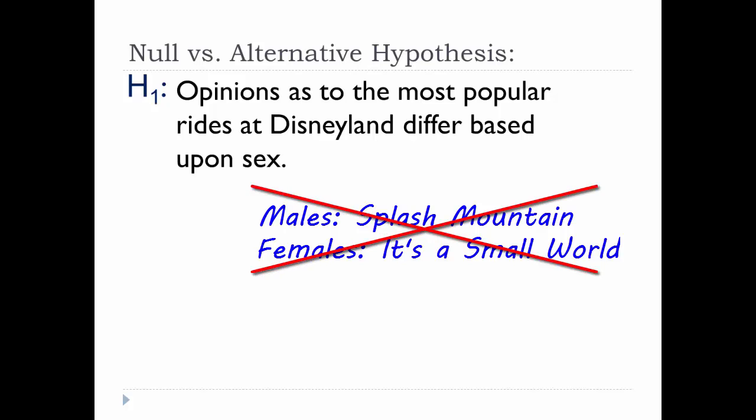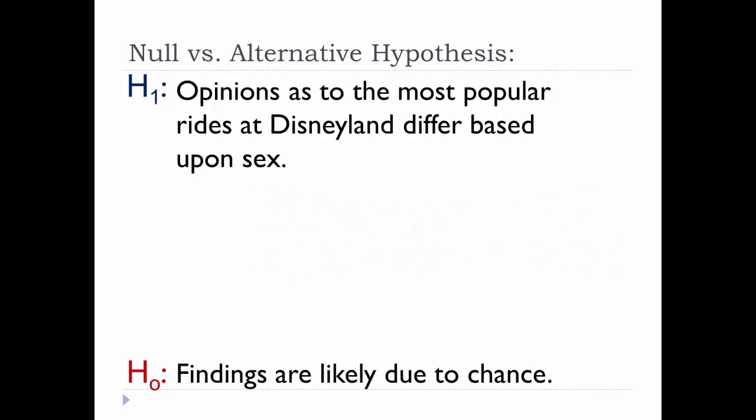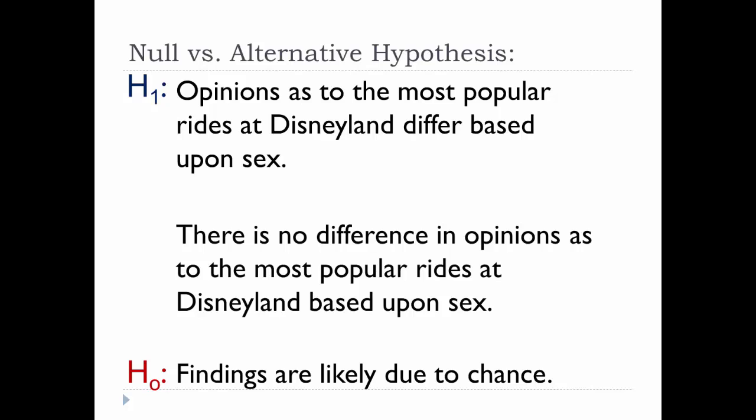One view is that you can't trust your findings, that the answers that you got occurred by chance. Note that in this view, the null hypothesis isn't saying that males and females don't have different opinions as to the most popular Disneyland attractions, just that your findings aren't outside the realm of chance or circumstance. We can't use your data to support your hypothesis. Your findings could just as easily come back that males and females hold the same opinions, which actually could support another alternative hypothesis.